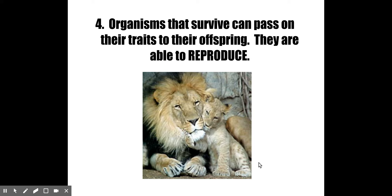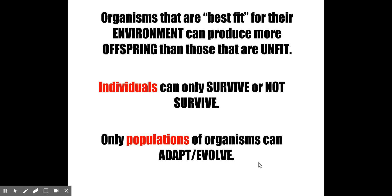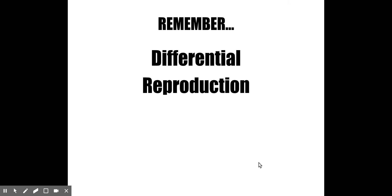Finally, organisms that survive can pass on their traits to their offspring — they're able to reproduce. Organisms that are best fit for their environment can produce more offspring than those that are unfit. Differential reproduction is the concept that organisms with favorable traits are going to survive, have more reproductive opportunities, and we'll see an increase in the allele frequency of their favorable trait in the population over time.